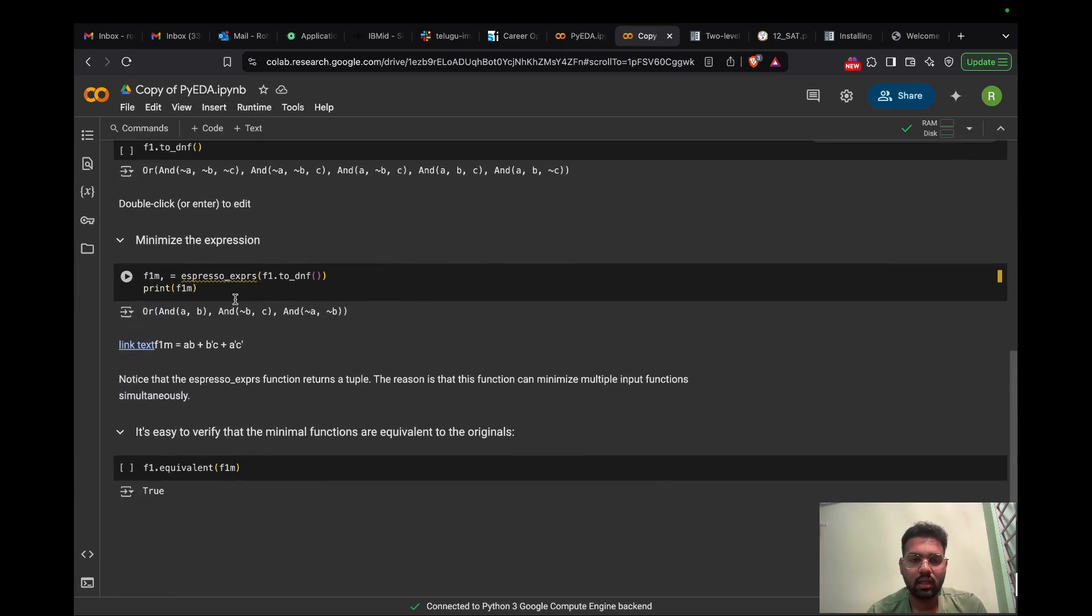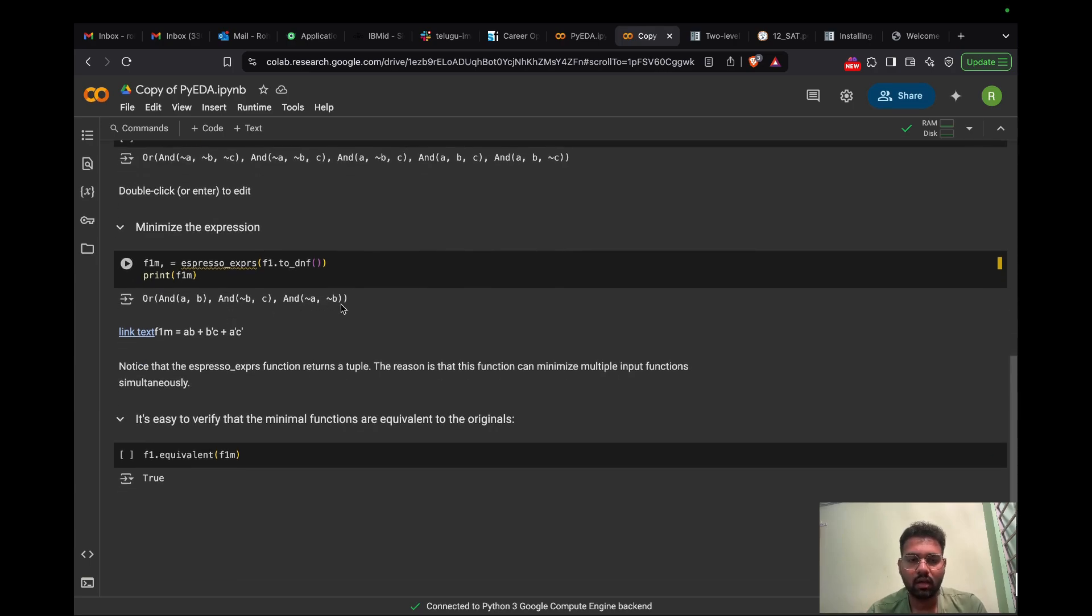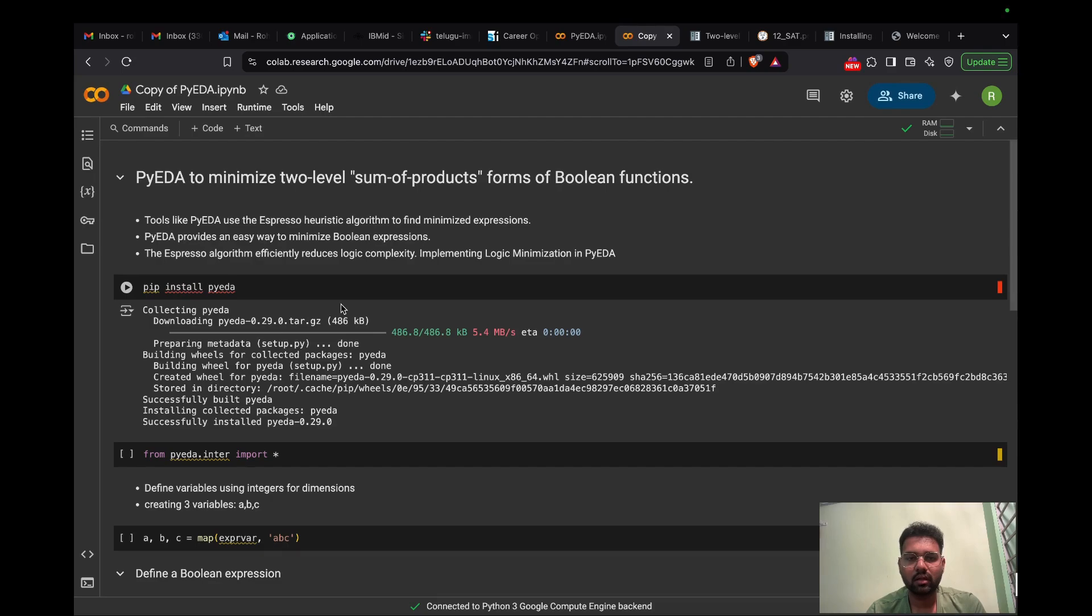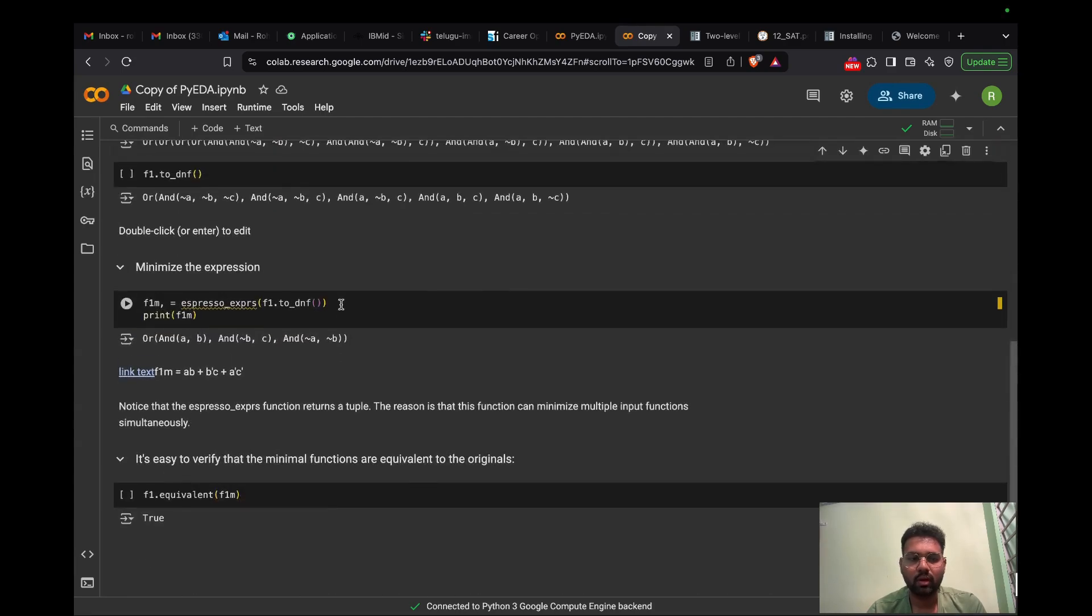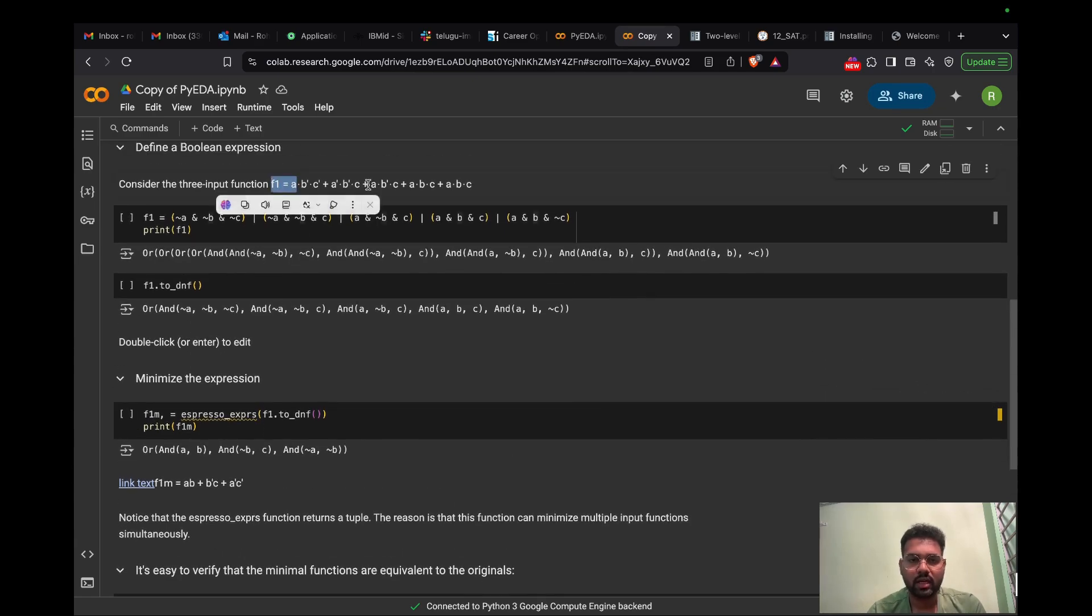To minimize the expression, we have a key function that is espresso_exprs. Here we can see this is the output: AB plus B̄C plus AC̄. This F1 function is minimized to this F1M function. Here F1M represents the F1 minimized function.